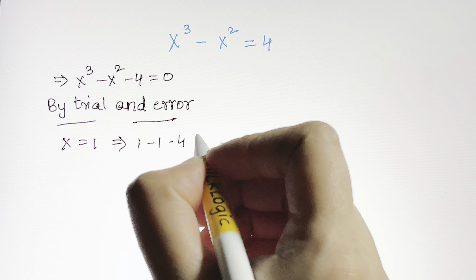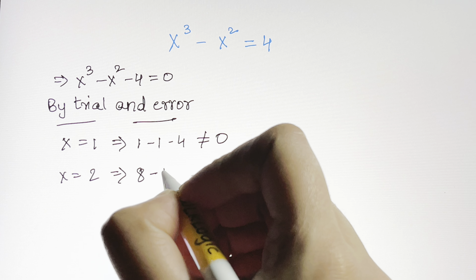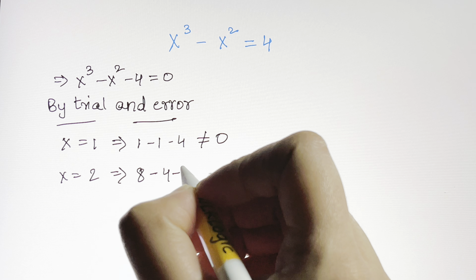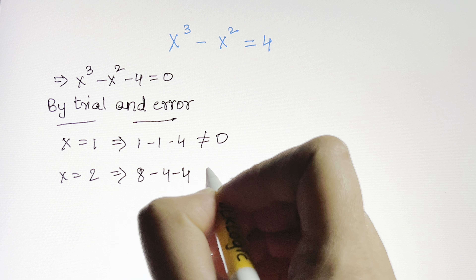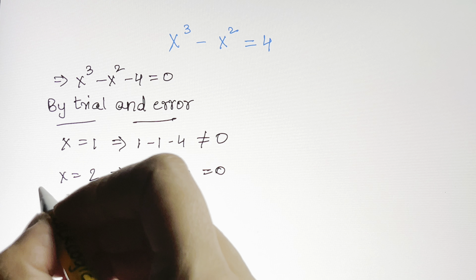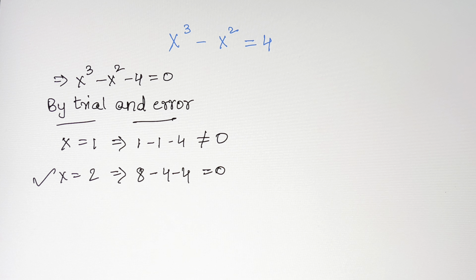Now let's take x equals 2. When we substitute 2 in place of x: 2³ is 8, minus 4, minus 4, and 8 minus 8 is equal to 0. Yes! So this is a factor. You can see how easily you can get the factors.